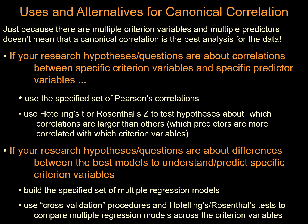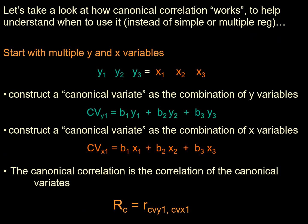If your research hypothesis is about differences between models — to understand or predict specific criterion variables — then we need to build a specified set of multiple regression models. Use cross-validation procedures to compare multiple regression models. If the research hypothesis is about differences between models, we can go for the cross-validation procedure by imposing a multiple regression model.